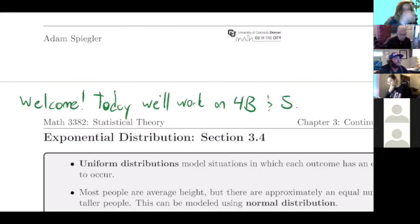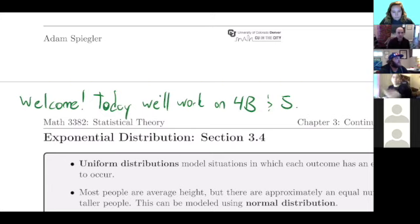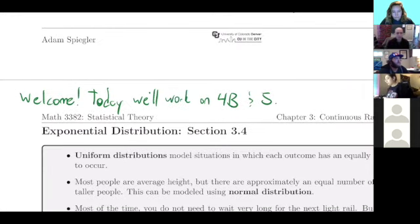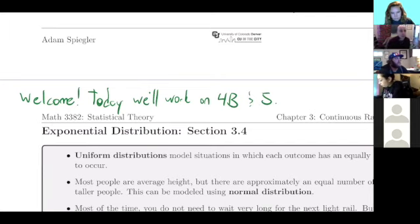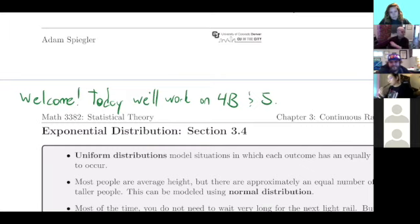I hope everybody's doing well. The point for today is to wrap up the last bit we didn't get to last time on continuous random variables — specifically exponential distributions, situations where that would be applicable, how we can calculate probabilities for exponential distributions, and then we'll take a look at joint distributions that you did some reading about before class today.